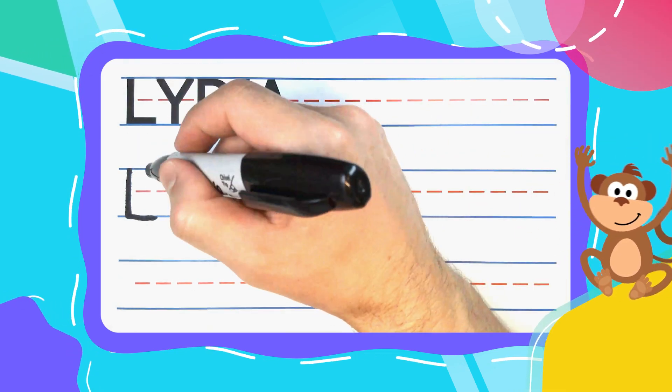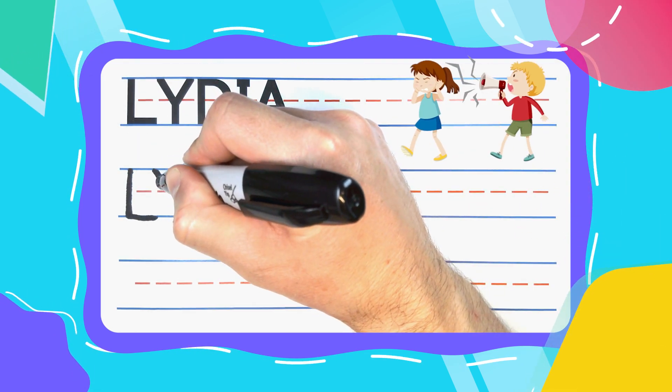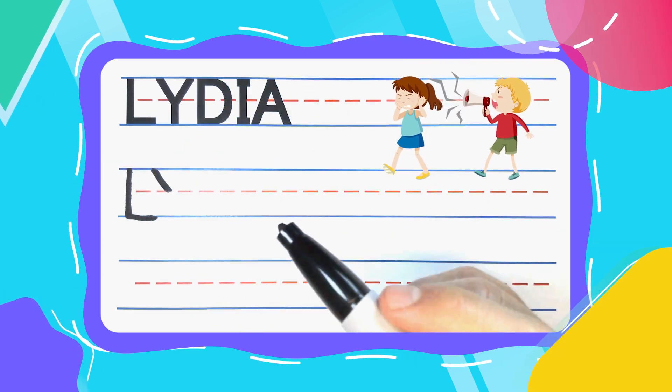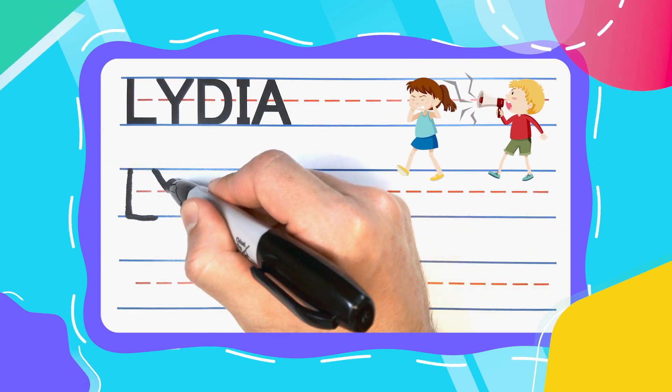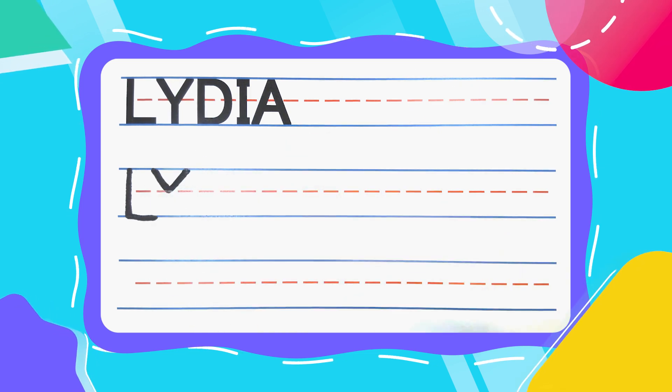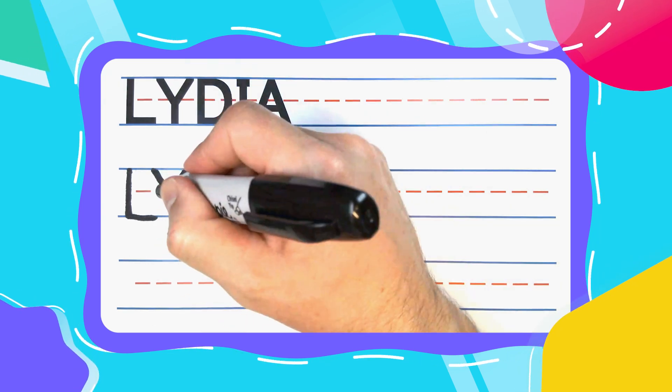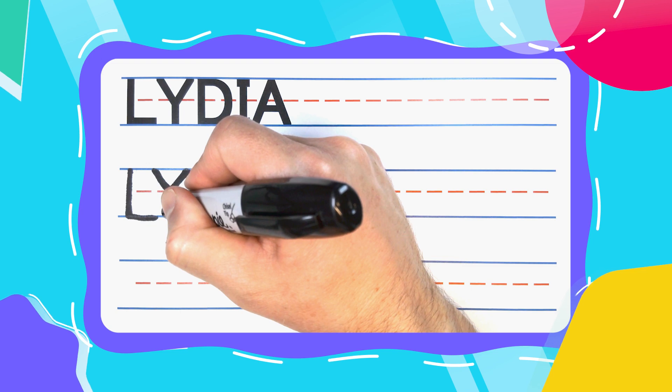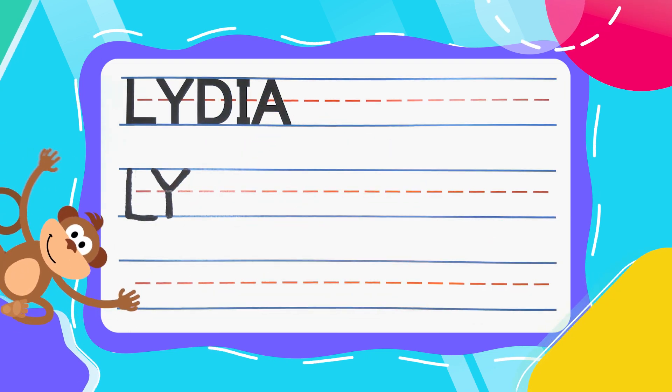The next letter is the super loud yelling Y. And yelling Y's start with a little baby V. So diagonal down to the middle, then diagonal right back up. Turn that V into a Y by kicking a pogo stick leg down to the bottom.